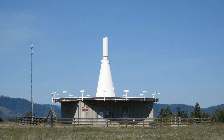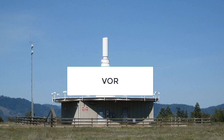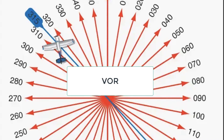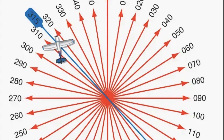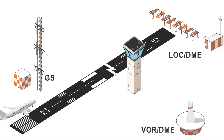Welcome to the Aviation School Channel. VOR, which stands for Very High Frequency Omnidirectional Range, is a radio navigation system used by pilots to navigate in flight. The VOR system uses a network of ground-based radio beacons to provide direction and distance information to aircraft. In this article, we'll explore how VOR works, its advantages, and its limitations.